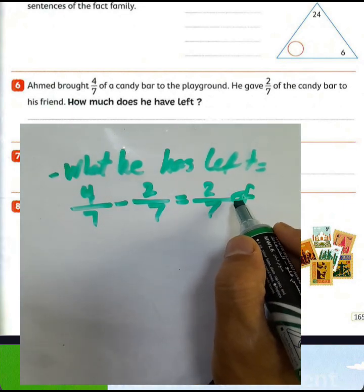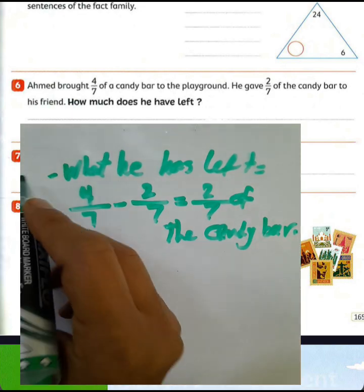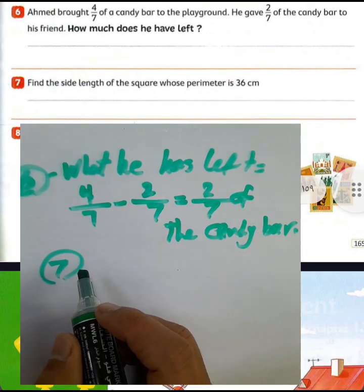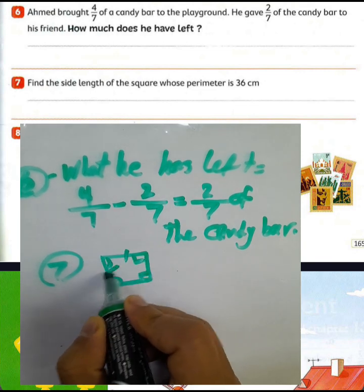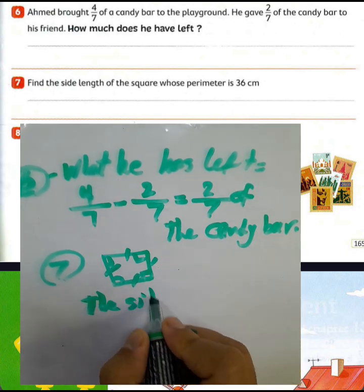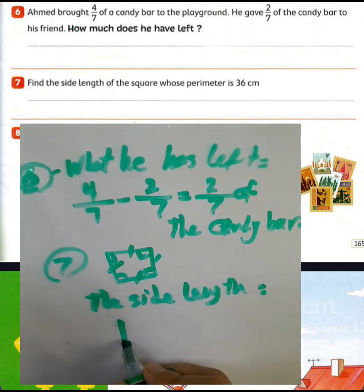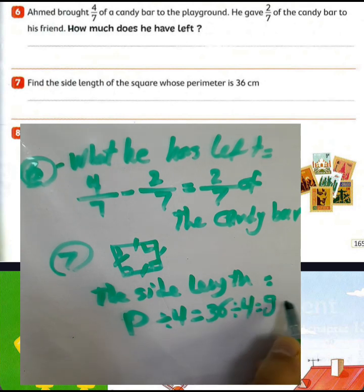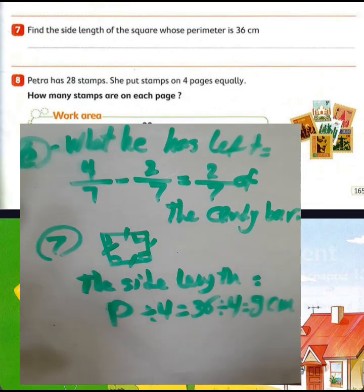Question number 7: find the side length of a square with perimeter 36. We know all sides of a square are equal. The perimeter given is 36, so the side length equals perimeter divided by 4: 36 divided by 4 equals 9. The side length is 9 centimeters.